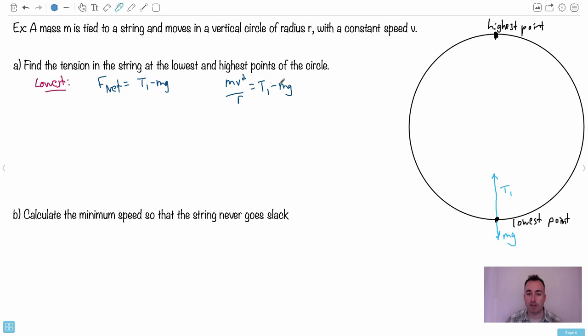Then I just want to solve for T1. So I get T1 by itself. I can move the mg over. So I have mv squared over r plus mg. And this is what I have here. I think this is as simple as I can make it. I can combine the m's if I wanted to, but I think this is good enough. So we'll say this is the tension one, depending on the mass and the radius.